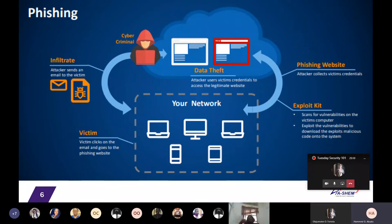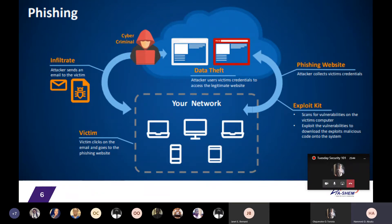On screen here we can see how phishing works. The cyber criminal infiltrates the organization by sending an email to users in your network, waiting and hoping for users to click the link. When your users click the link, it takes them to a website hosted somewhere where they input their credentials, which are then used to access your network. Alternatively, clicking the link can cause exploit kits to be downloaded to their PC, running malicious code. This can also compromise your network.